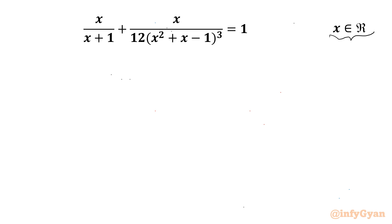Let us get started by writing our domain restrictions: x plus 1 cannot be 0, and x squared plus x minus 1 cannot be 0.